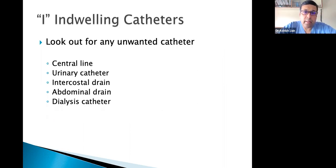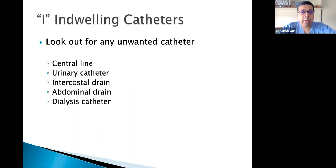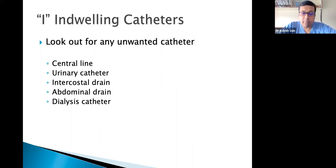I is for Invalid catheters. We must ask: is there any unwanted catheter? Does the patient still need the central line, urinary catheter, intercostal drain, abdominal drain, or dialysis catheter? If not, take it out. Removing unnecessary catheters reduces infectious complications. This principle applies to the endotracheal tube as well.